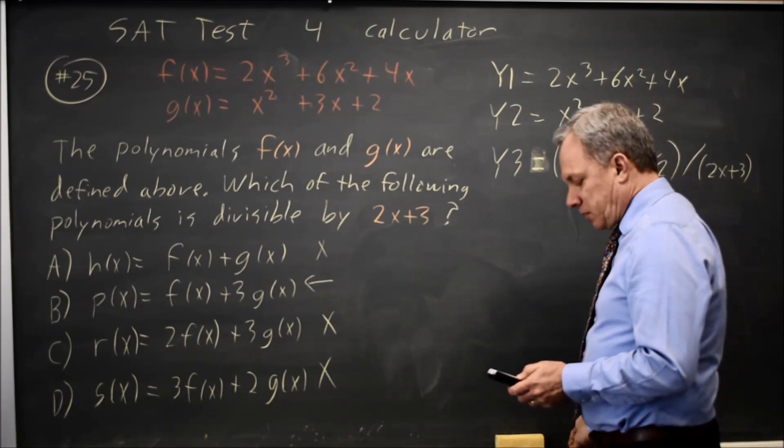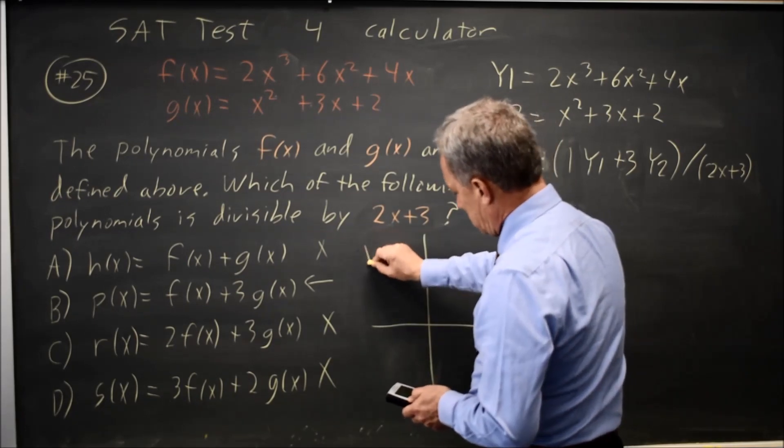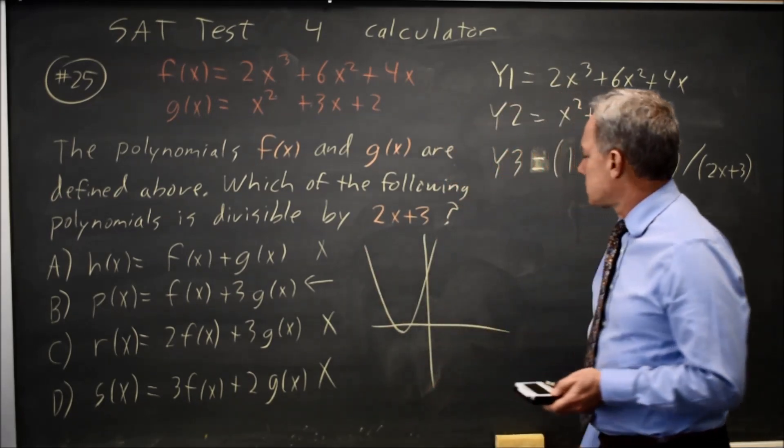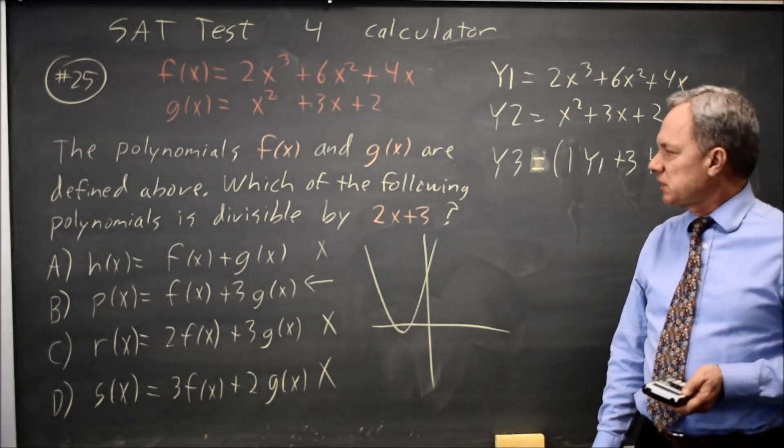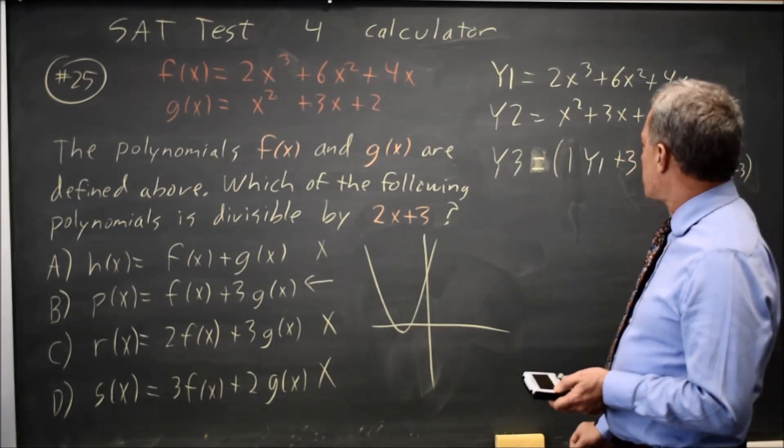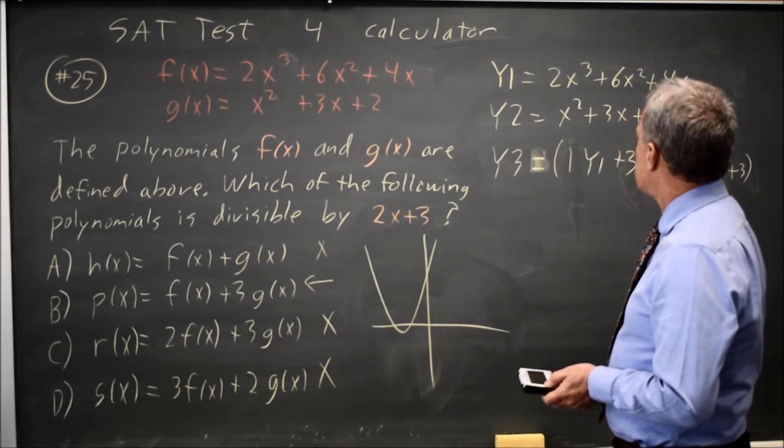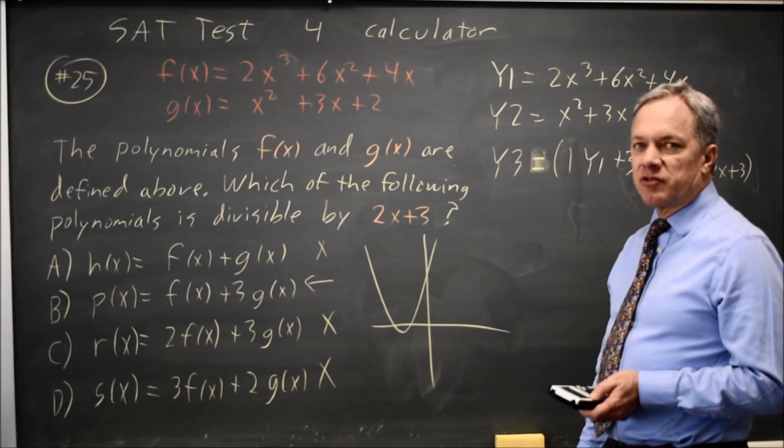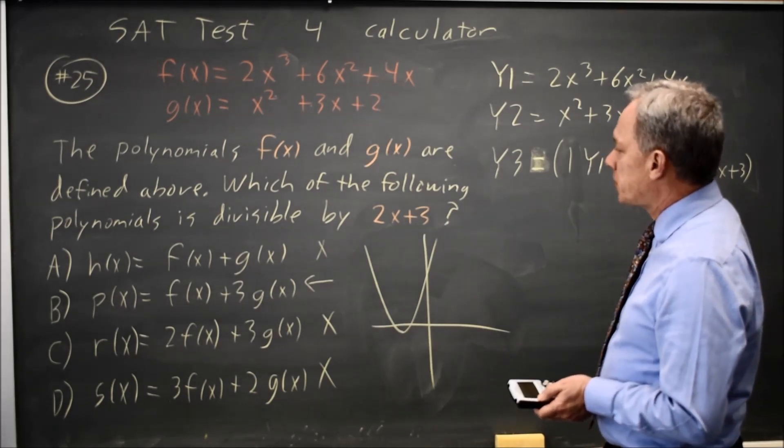and select graph. My graph looks like this. It's a perfect parabola. There may be a hole there that I can't see, but on the graph, it looks like it's evenly divided because I don't get the vertical asymptote. So choice B would be the correct answer.